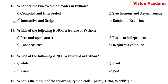Question number 17. Which of the following is not a feature of Python? Option A: free and open source. Option B: case sensitive. Option C: platform independent. Option D: requires a compiler. Python is an interpreted programming language, so option D — requires a compiler — is the right answer, because Python does not use a compiler.